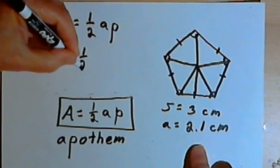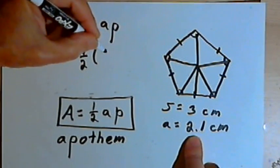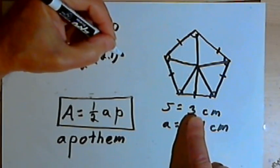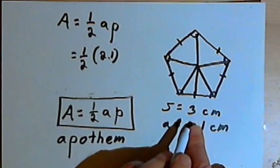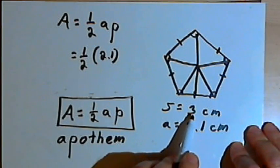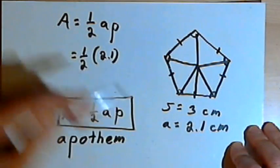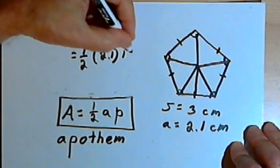So that's going to be one-half times the apothem, which is 2.1, times the perimeter. So I want to take that 3 and multiply it by the number of sides, which is 5. 3 times 5 is 15.